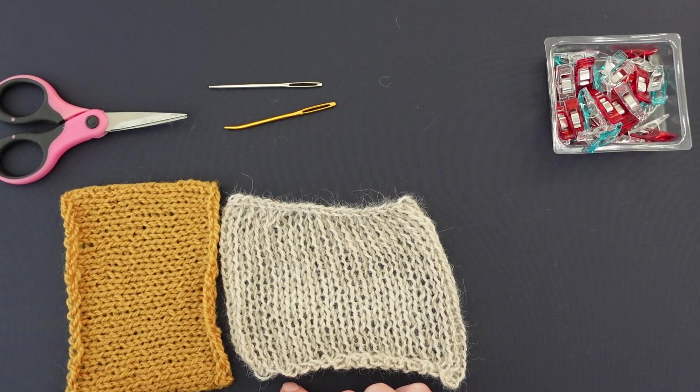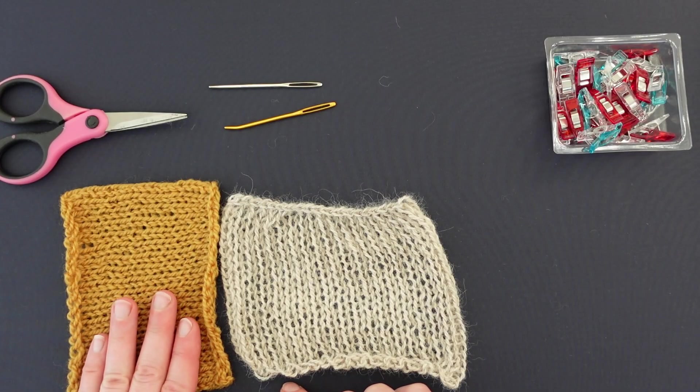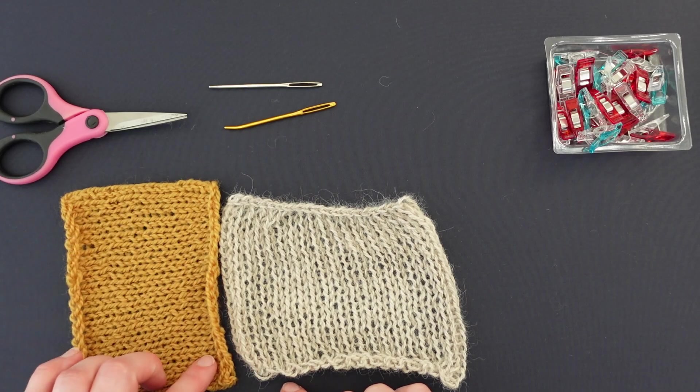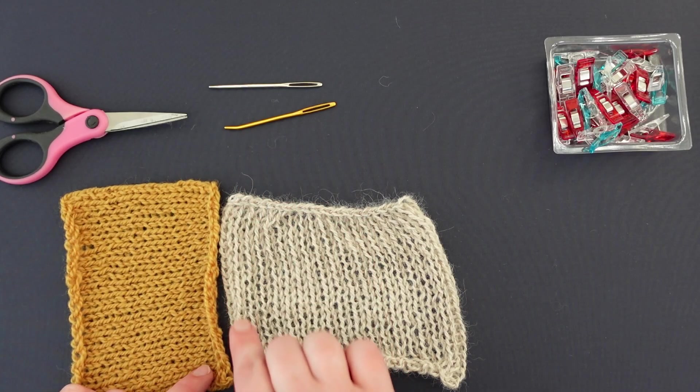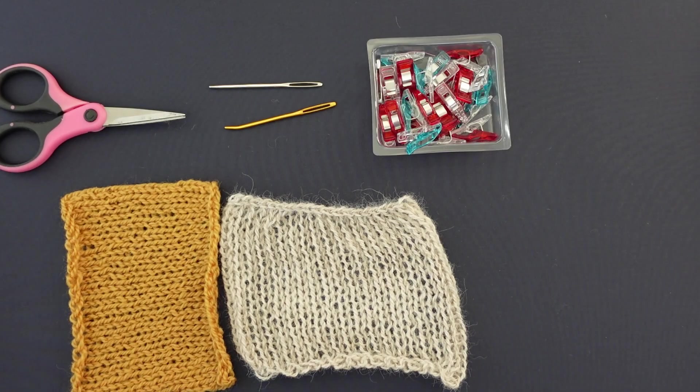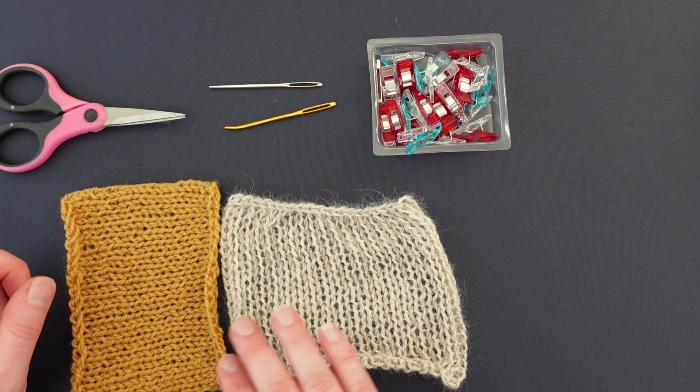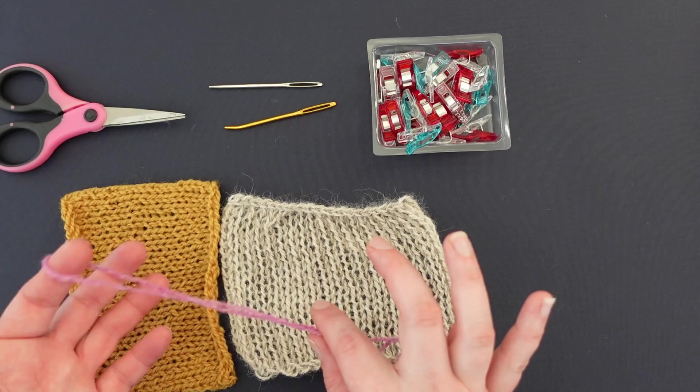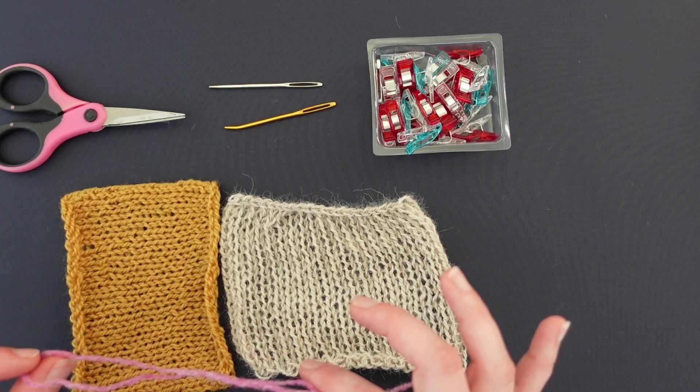In this video I'm going to share how to seam two pieces of knitting together where you're seaming a cast-on or bound-off edge to a vertical edge. As with the last example, I'm using contrasting colors of the swatches as well as the yarn that I'm using to seam.